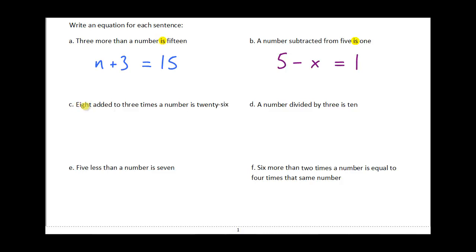The next example: 8 added to 3 times a number is 26. So again I'll key in on that 'is' because that gives me my equal sign. On this side of the equation, 'is 26'—that's just going to be 26. And then over here I've got 8 added to 3 times a number, so I've got 8 plus 3n, three times a number.